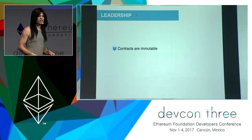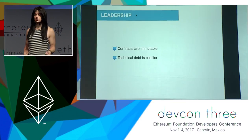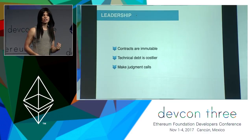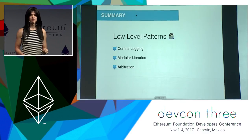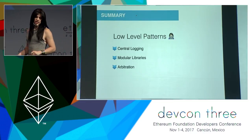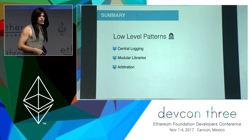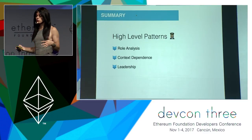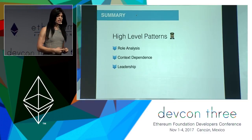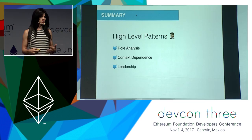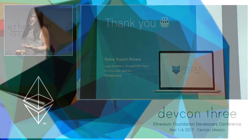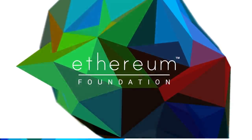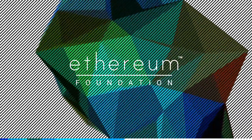Lastly, leadership in blockchain at the developer level: because contracts are immutable, technical debt is much costlier. When you're making decisions as a lead engineer, you have to make a lot of judgment calls because that code might be on-chain for a long time. To recap: we talked about central logging, modular libraries, and arbitration as architectural patterns at a lower level. And at the higher level, I hope you can take away concepts about leading your team, being more dependent on context, and bringing role analysis to everything you do. Thank you very much.